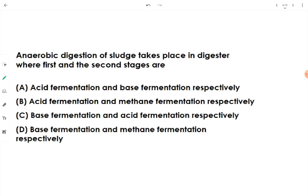Anaerobic digestion of sludge takes place in a digester with two stages. The first stage is acid fermentation, where hydrolysis and liquefaction of organic matter takes place due to acid-forming bacteria. The second stage is methane fermentation, where gasification of organic acids by acid-splitting methane-forming bacteria takes place. The answer is acid fermentation and methane fermentation respectively.